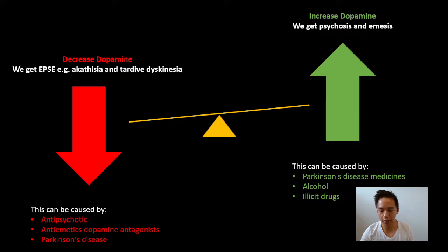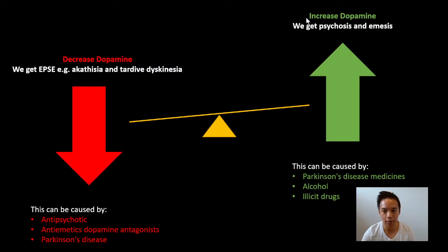Here's a good way of thinking about dopamine and drugs in general when we're trying to learn the different mechanisms of agonists and antagonists. I run a presentation called 'How to Study Effectively and Apply it to Medicines and Pharmacy' and this is a slide from it. Basically, if we look at dopamine, whether we're decreasing or increasing it, we can get this kind of seesaw action happening.